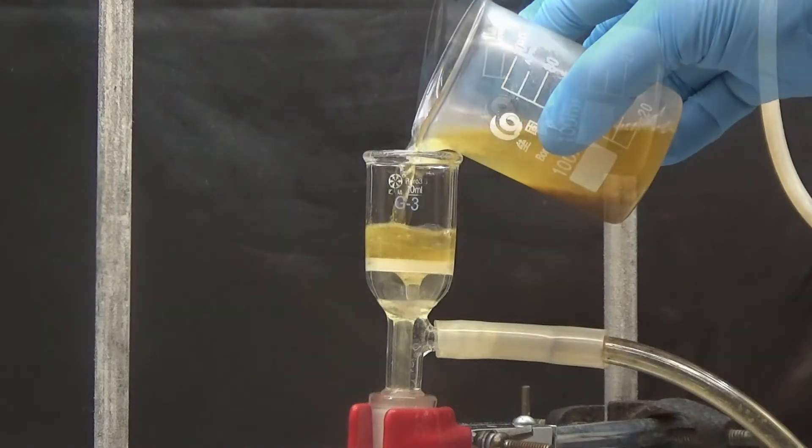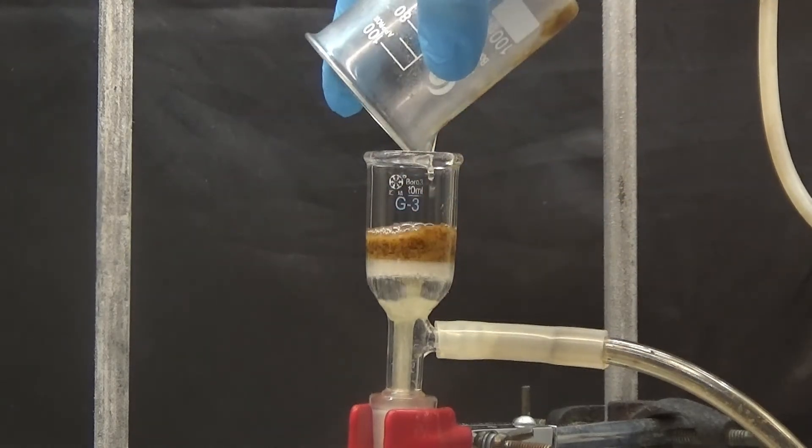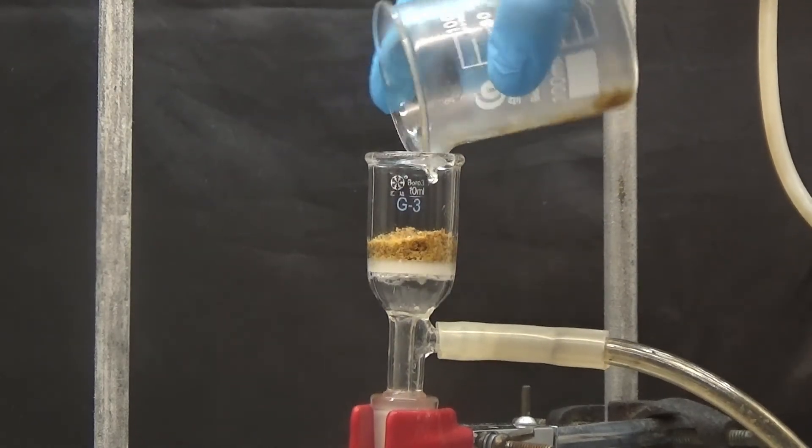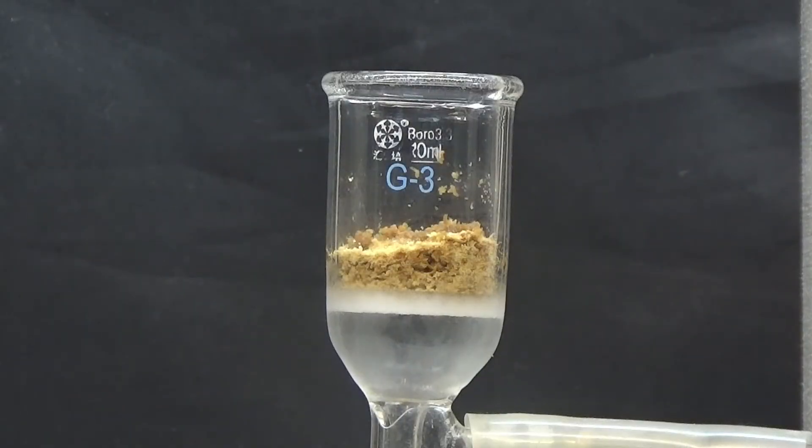The toluene extraction was left in the refrigerator for 12 hours and the solid was collected by vacuum suction. Dry the product by suction on the filter funnel for 1 hour.